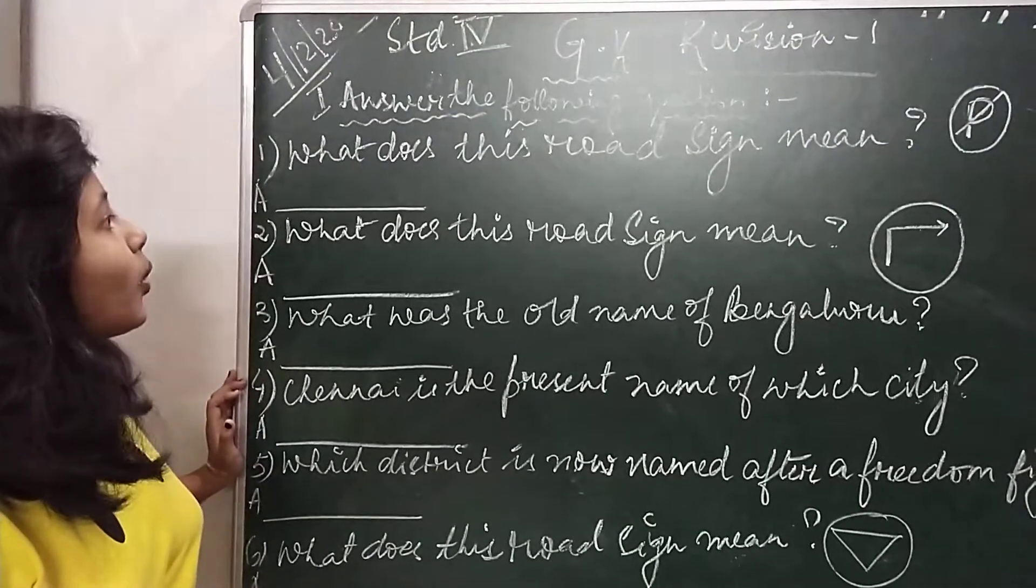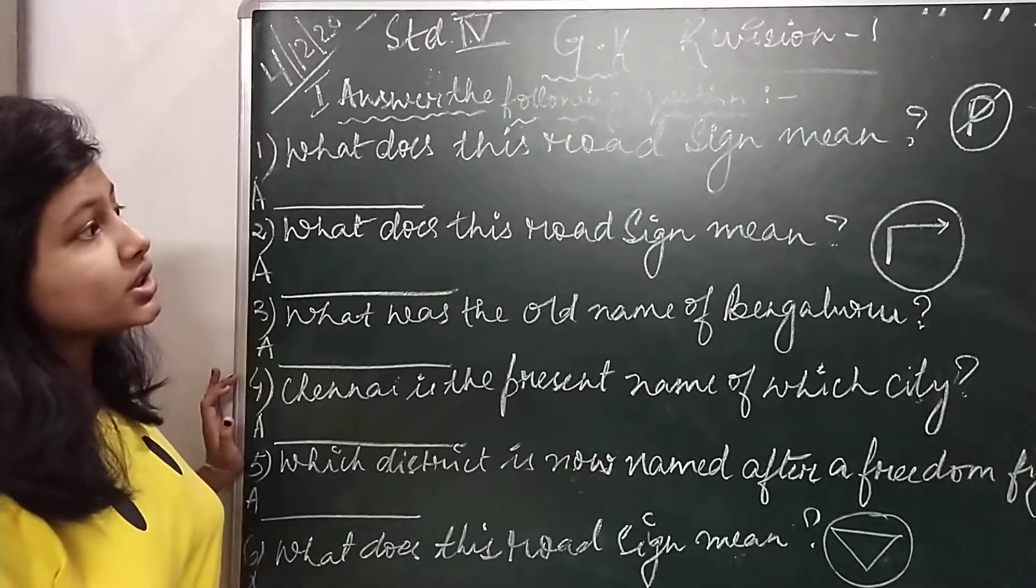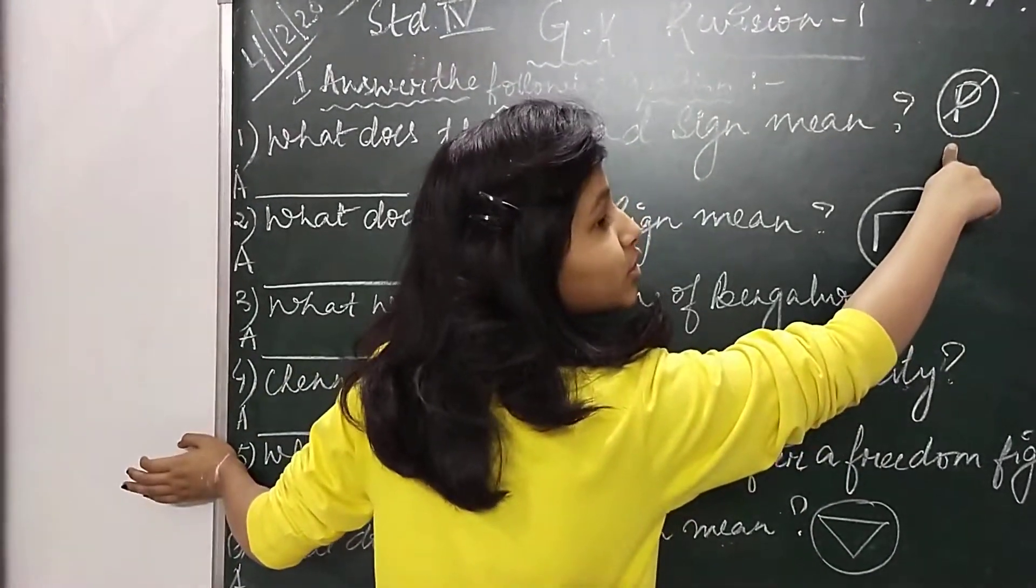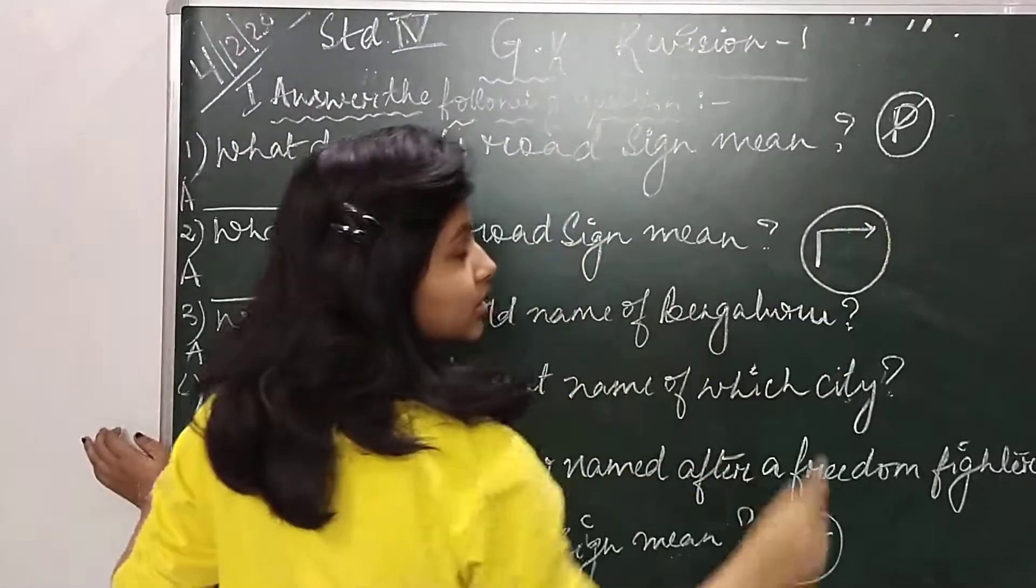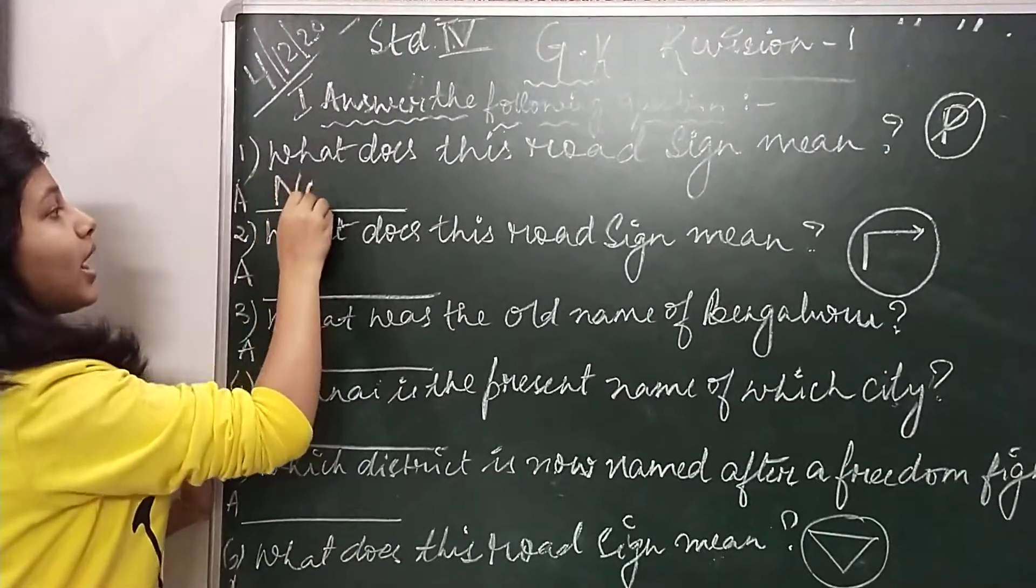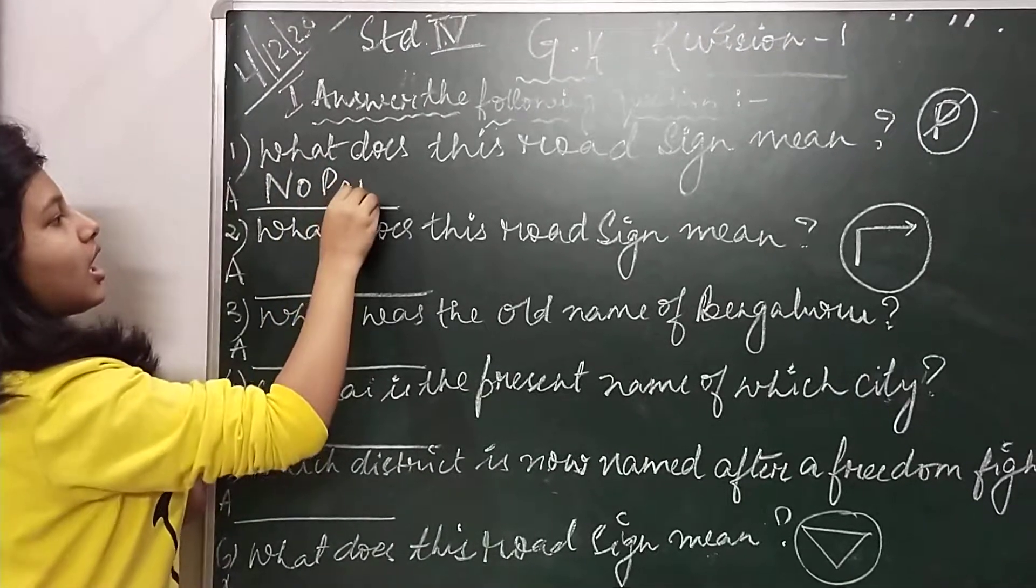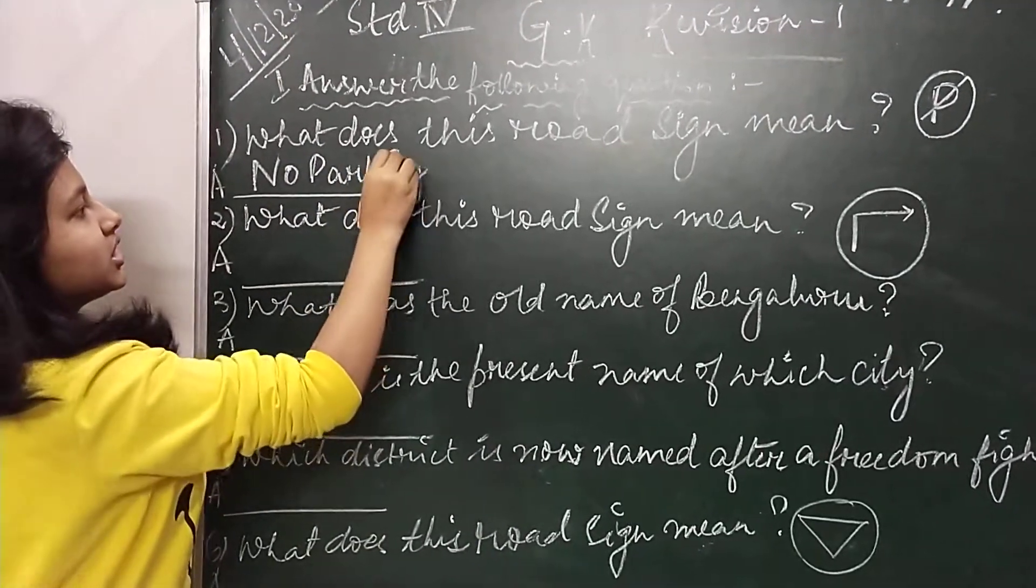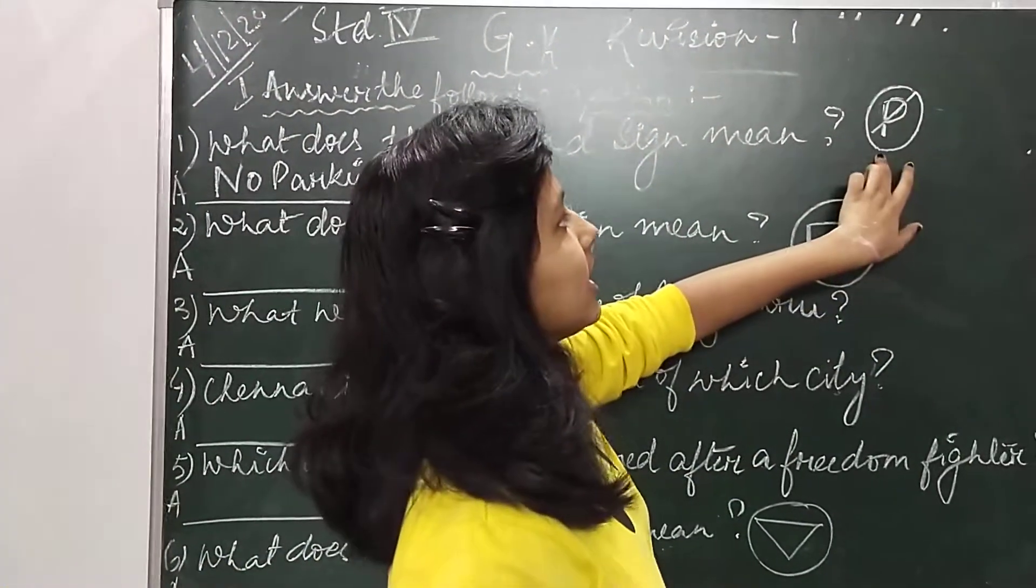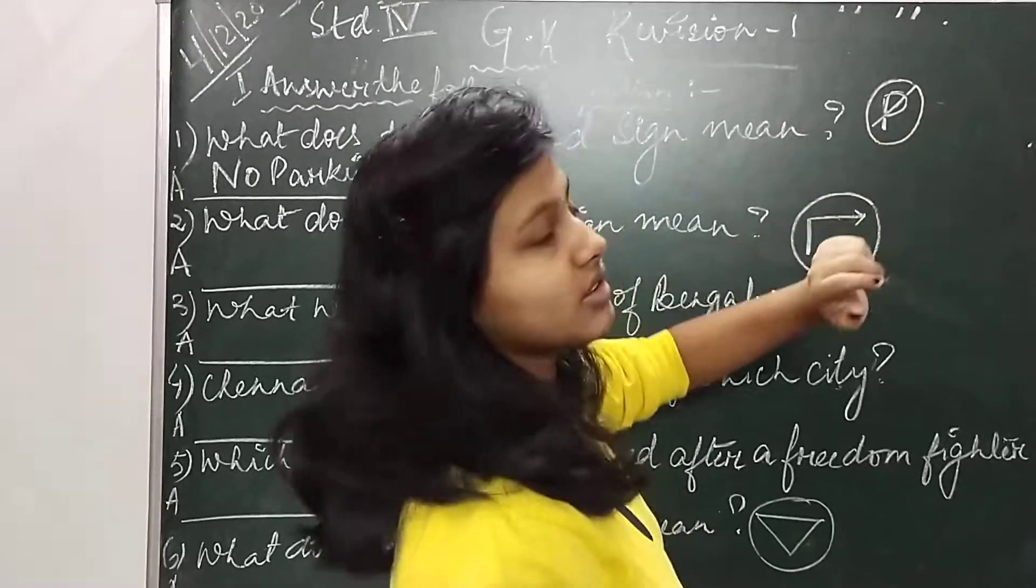So the first question is, what does this road sign mean? It means you have to say which road sign does this mean. So children, the answer will be no parking, P-A-R-K-I-N-G, no parking, because there is a P and a cross is given.